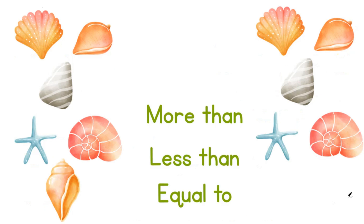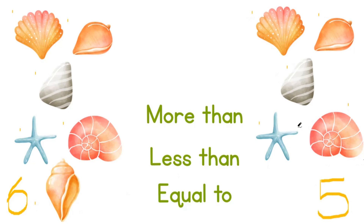Let's look at more than, less than, equal to. Here we have shells — the same shells on both sides. Let us count, starting with the left-hand side: 1, 2, 3, 4, 5, 6. There are 6 on this side. And on the right side: 1, 2, 3, 4, 5. There are 5. So is our left side more than, less than, or equal to our right-hand side? Great! Our left-hand side is more than.